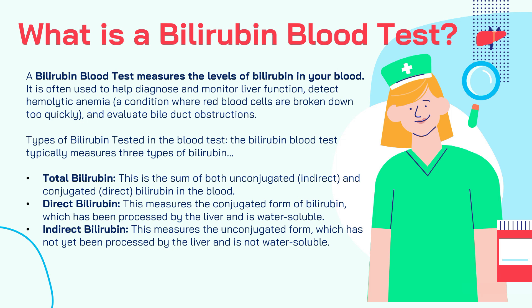The bilirubin blood test typically measures three types of bilirubin: total bilirubin, direct bilirubin, and indirect bilirubin. Total bilirubin is the sum of both the unconjugated (indirect) and conjugated (direct) forms. Direct bilirubin measures the conjugated form — already processed by the liver and water soluble. Indirect bilirubin is the unconjugated form, not yet processed by the liver and not yet water soluble.